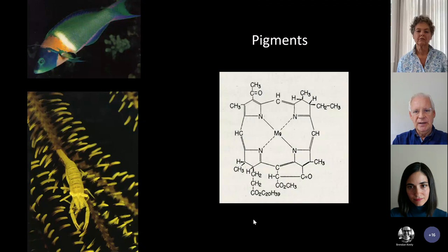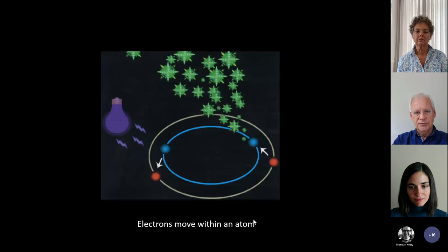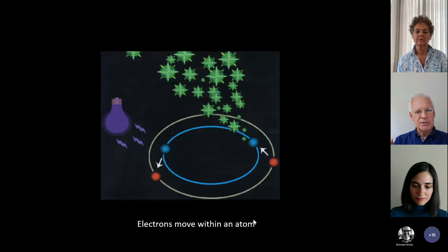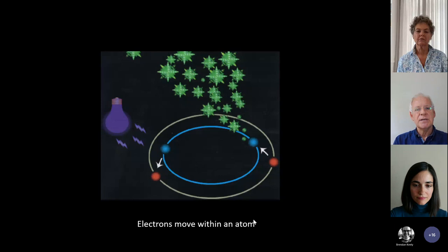Pigments are molecules that effectively absorb some of the energy in light. They will remove some wavelengths from white light and backscatter the rest, so the colours you see are those that are backscattered. Fluorescence works on the atomic level. An outer electron in an atom is given energy from ultraviolet light to move it into a new outer shell. It then drops back down into its original shell and re-emits that energy. It loses a little energy as heat, so the re-emitted energy is at a slightly longer wavelength — for example, ultraviolet light can be re-emitted as green light.